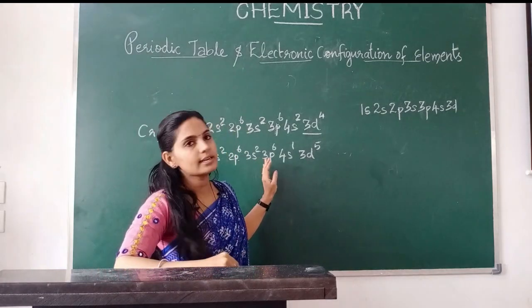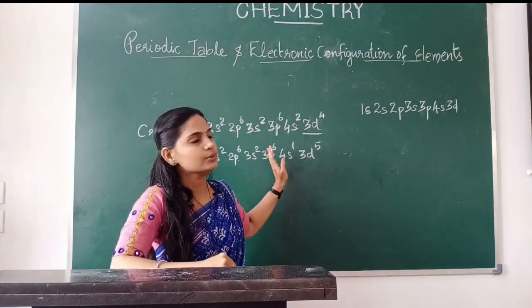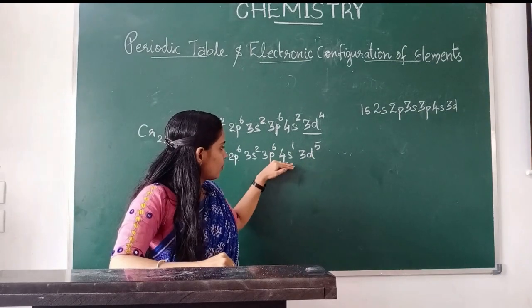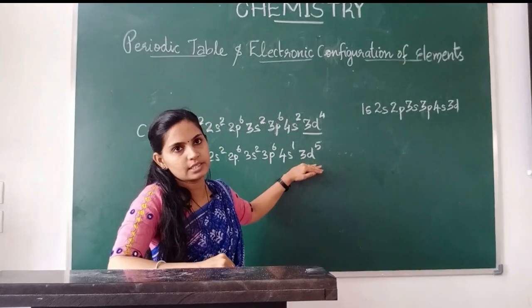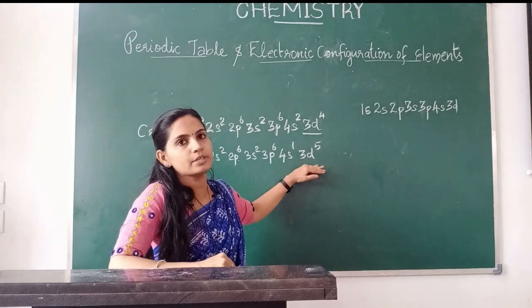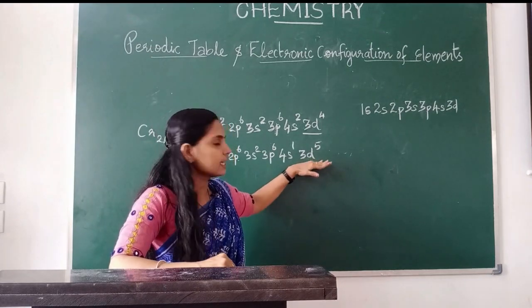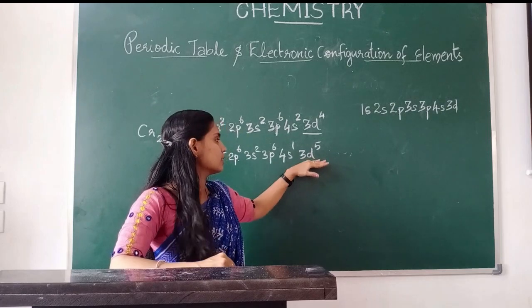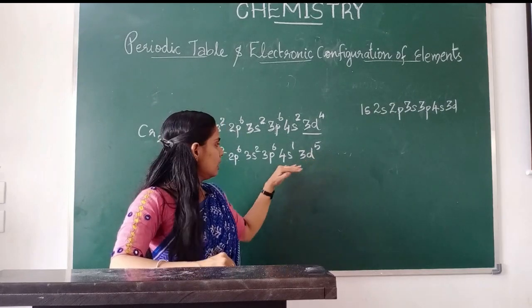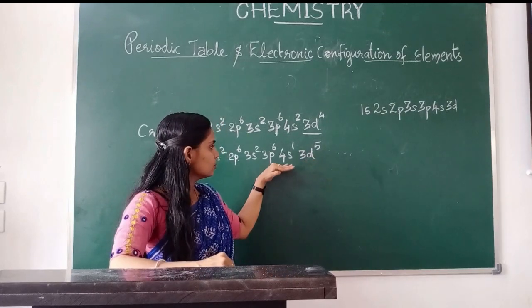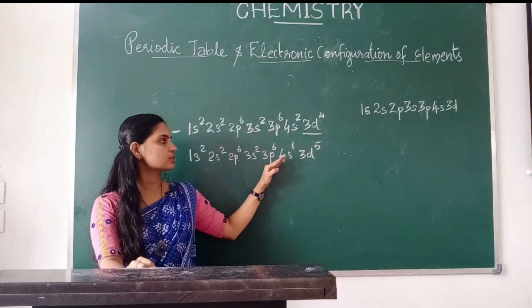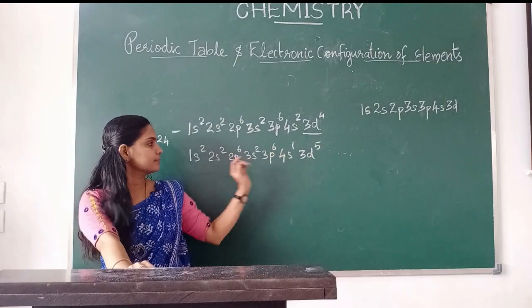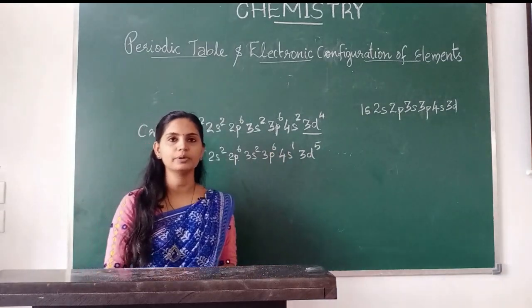One electron can shift from 4s2 to 3d, giving us 4s1, 3d5 configuration. This makes the 3d orbital acquire a half-filled state. Since the half-filled 3d configuration is more stable, that is the actual electronic configuration of chromium.